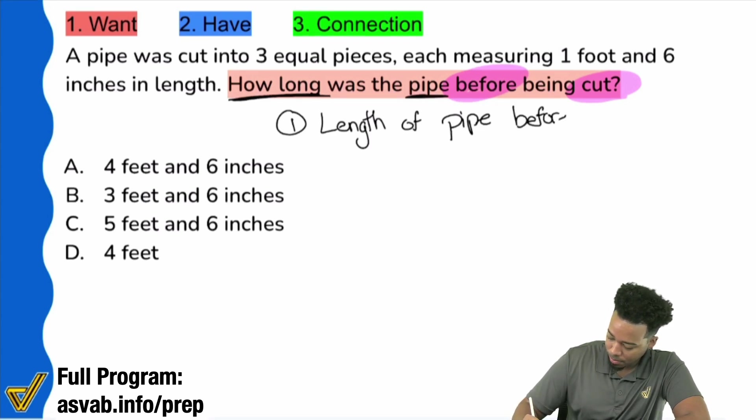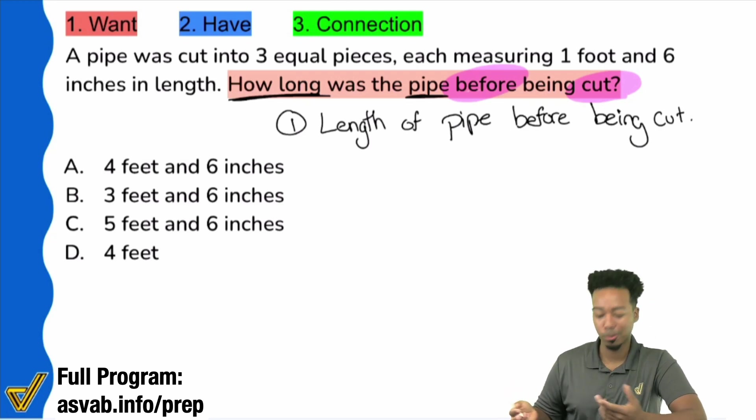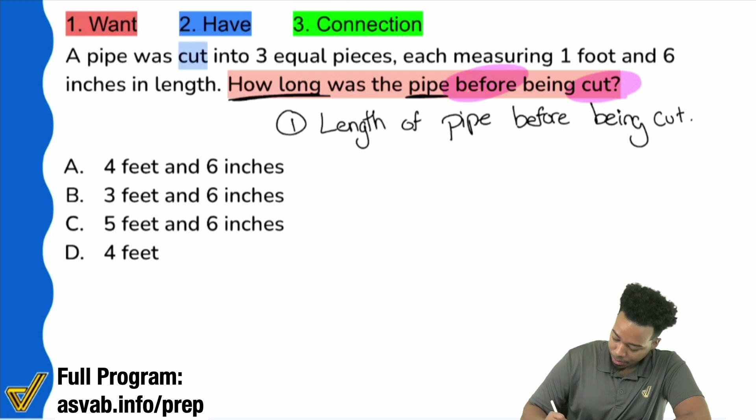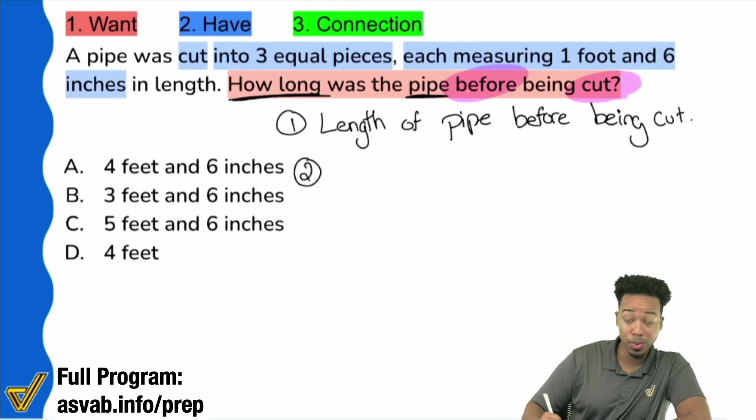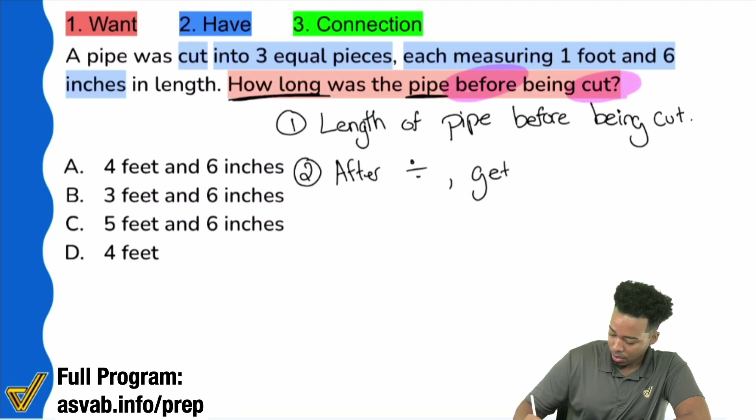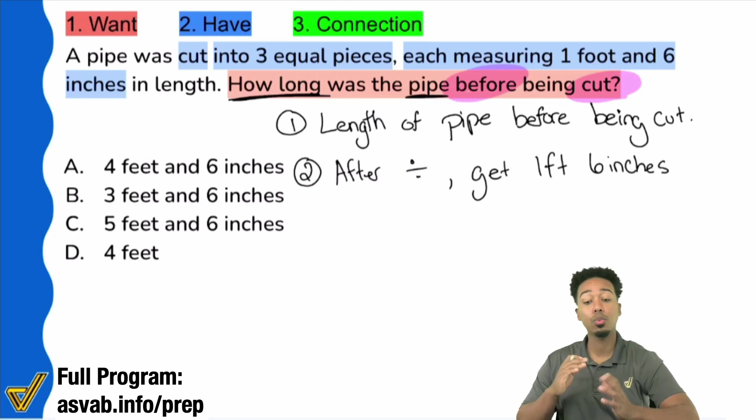Before being divided again means multiplication. Here's the information we have to deal with. We have a pipe was cut into three equal pieces where each piece measured one foot and six inches. So again, after the division, after being cut, you get one foot six inches. That's what you get when you divide it.